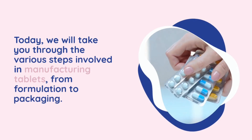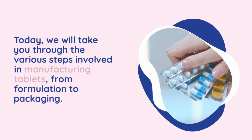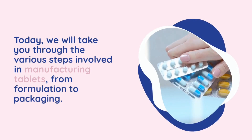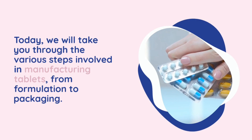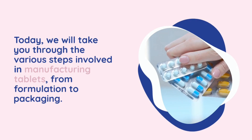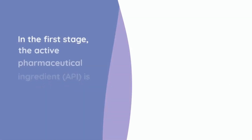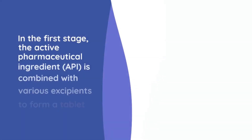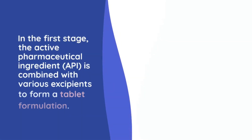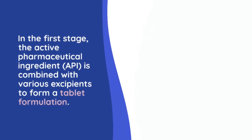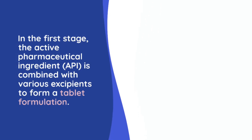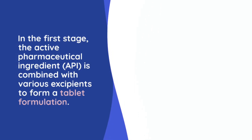Stage 1: Formulation and pre-formulation. In this stage, the active pharmaceutical ingredient, API, is combined with various excipients to form a tablet formulation. Excipients are inactive substances that help in the manufacturing process and enhance the stability, appearance, and functionality of the tablet.